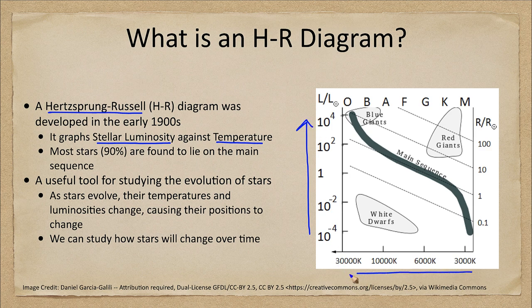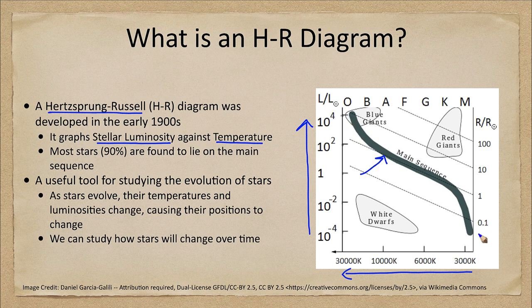We see temperature on the x-axis increasing to the left. What was found was that most stars — 90% of stars — lie on the main sequence. This is a diagonal going from the upper left down to the lower right, and it holds the vast majority of stars.